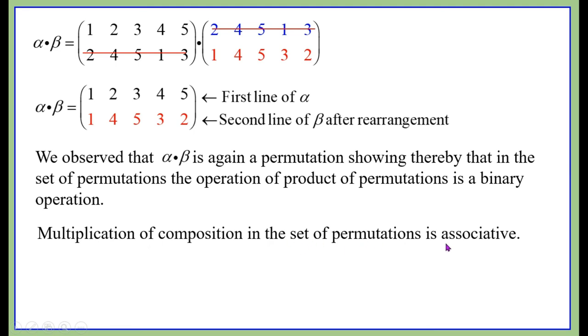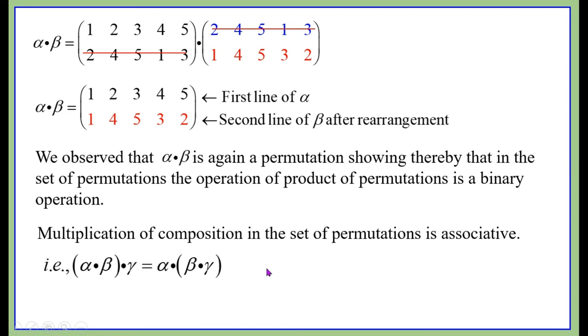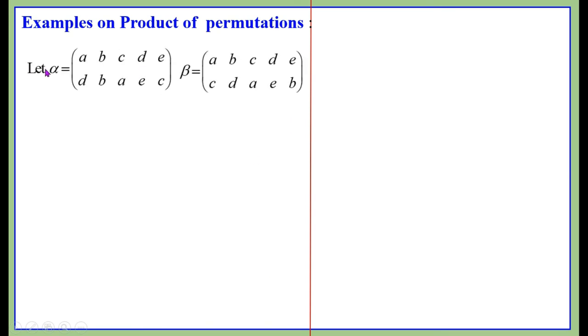Multiplication by composition in the set of permutations is associative. That is, (alpha times beta) times gamma equals alpha times (beta times gamma). This is true for any three permutations in the set of permutations.